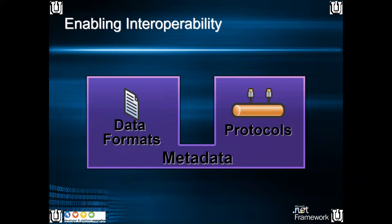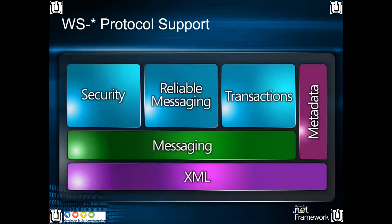In the metadata, when you add a service, you will get two things: the protocol, the binding which you have used, and the data format — what type of data you are going to share. You have to set it and you will get it by adding the references. Service enhancement gives you security. In the metadata, what you will get? You will get security, reliable messaging, transactions, messaging — these things.